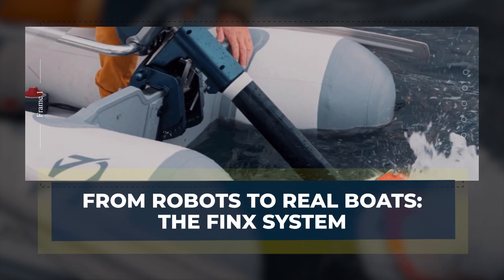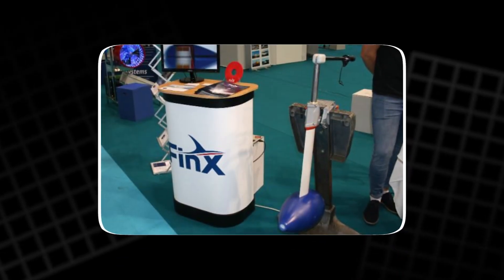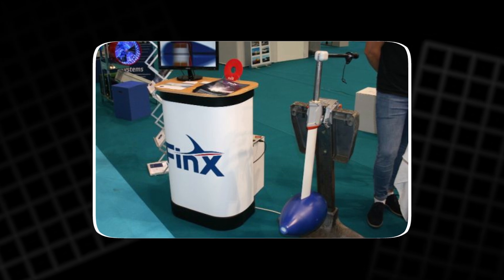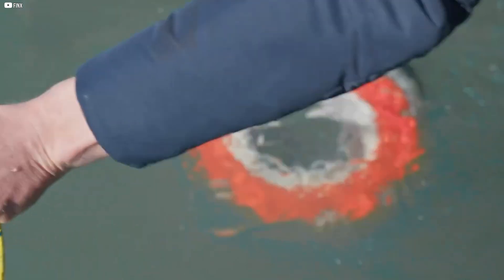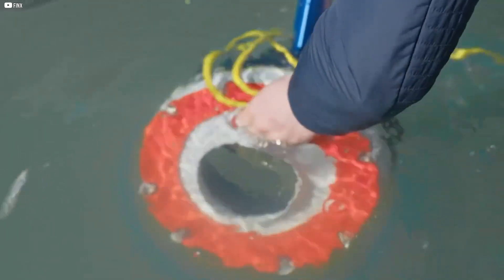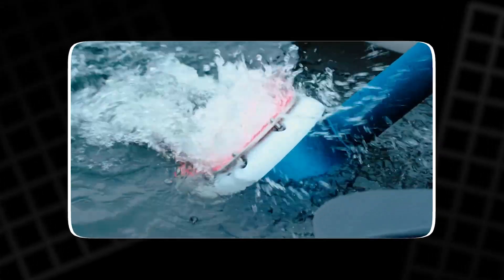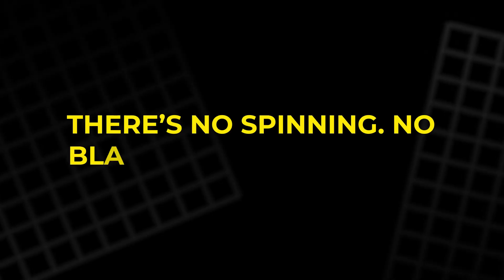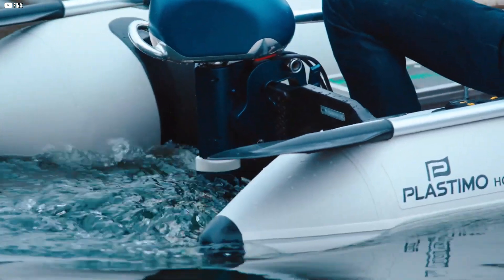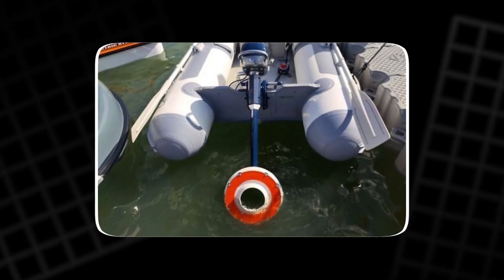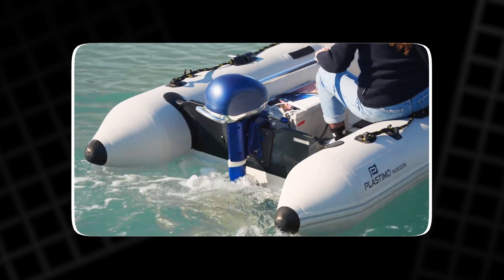From robots to real boats, the FinEx system. Moving from lab experiments to the real world, a company called FinEx is trying to bring jellyfish-like propulsion to boats. Their invention? A system called the finesse. It doesn't use a propeller at all. Instead, it pulses a flexible membrane, sending waves through it, just like a jellyfish's bell. This undulating motion creates a jet of water behind the boat, pushing it forward. There's no spinning, no blades, just movement. It's quieter, potentially safer for marine life, and less likely to get tangled in ropes or seaweed. They claim it's the first membrane propulsion system of its kind. In theory, it's a dream for small boats.